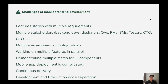So as you can see, to develop a mobile app, the mobile team has a lot of challenges. We have feature stories with multiple requirements, multiple stakeholders to communicate with, multiple environments and configurations that need to be supported and tested, and team members often work on multiple features in parallel. UI components often have multiple states such as happy state, error state, loading state, or empty state. Mobile app deployment is complicated since we depend on third-party channels such as app stores, and the separation of development and production code is very important as well.